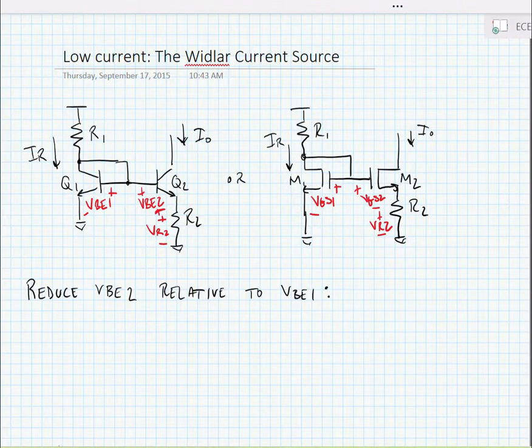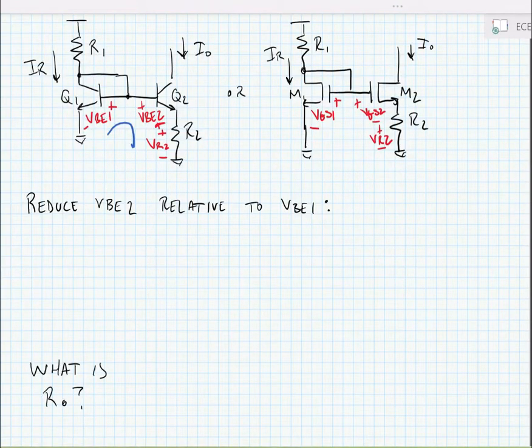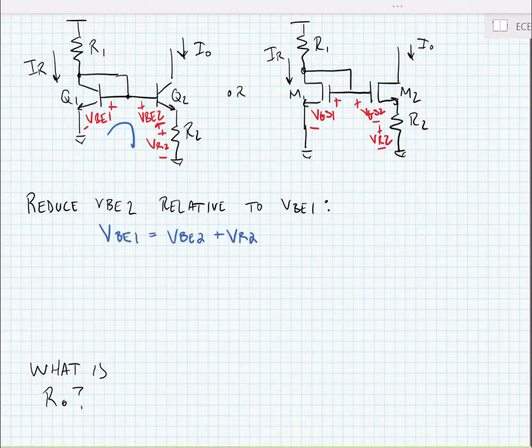Let's do our analysis for the BJT case. We're going to do KVL around the base-emitter loops. VBE1 equals VBE2 plus VR2, and VR2 equals the output current times the resistance. We can also substitute values in for the base-to-emitter voltages.